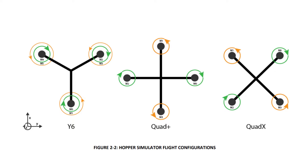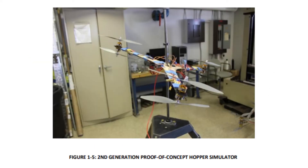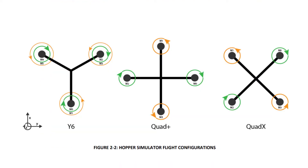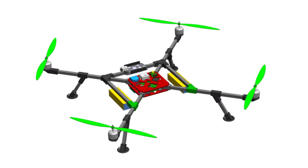In multi-rotor aircraft, there are many different flight configurations possible. In my thesis I tried three: the Y6 configuration, which has three arms with two motors each; the quad plus configuration, shaped like a plus sign; and the quad X configuration, shaped like an X — which is the one I went with. I chose quad X because I can mount the camera in the forward direction without an arm blocking my view. However, this also makes the drone harder to control in terms of writing the control logic in the flight computer.